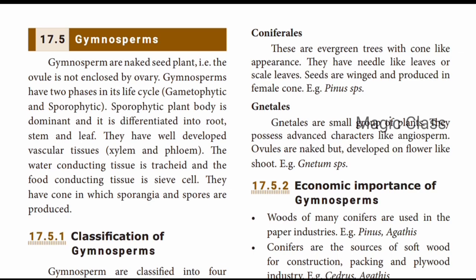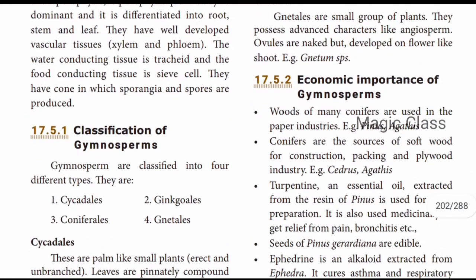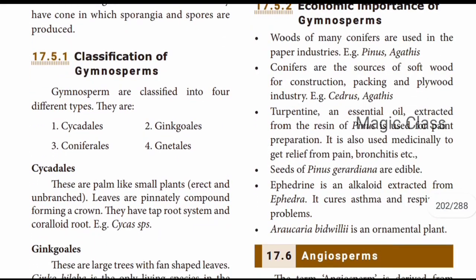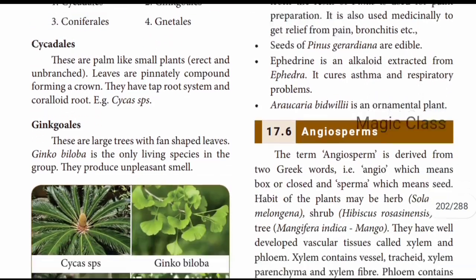Regarding the economic importance of gymnosperms: wood of many conifers is used in the paper industry. Conifers are the source of softwood for construction, packing, and plywood industries. Turpentine, an essential oil extracted from the resin of Pinus, is used for pain preparation and medicinally to get relief from pain and bronchitis. The seeds of Pinus are edible. Ephedrine is an alkaloid extracted from Ephedra and is used to treat asthma and respiratory complications. Gymnosperms are also used as ornamental plants.